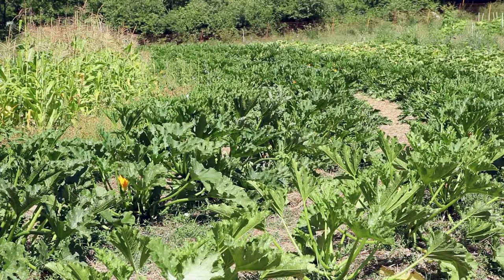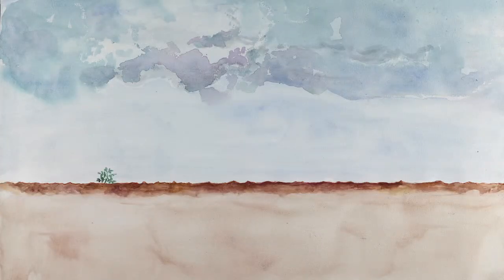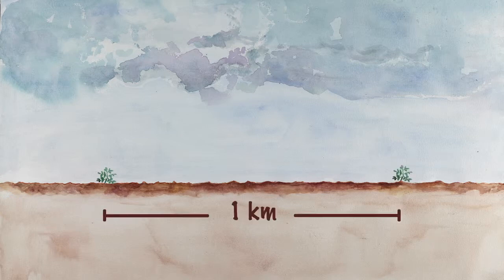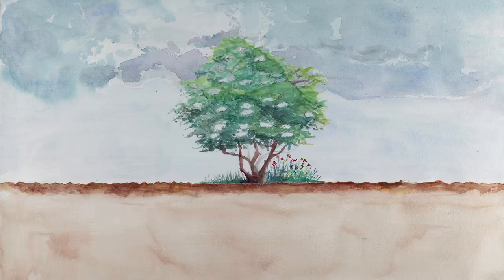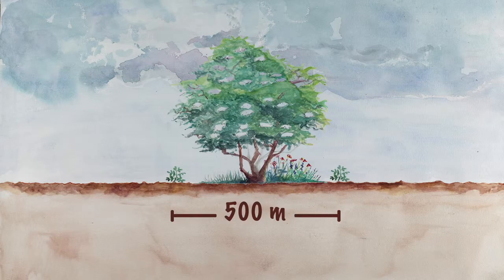It is, on the other hand, important to separate two varieties from the same species by a distance of one kilometer. This can be reduced to 500 meters if there is a natural barrier, such as a hedge.